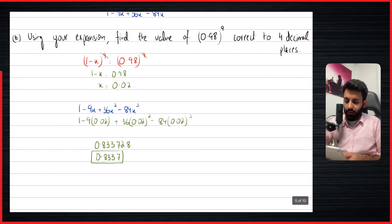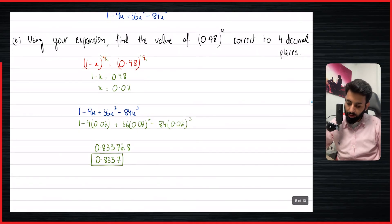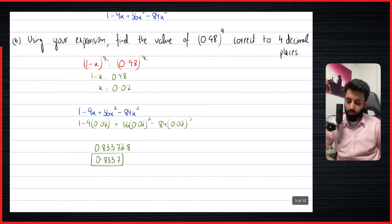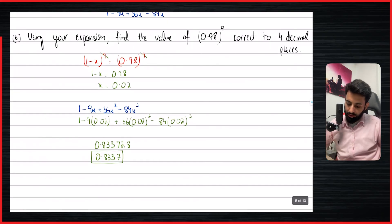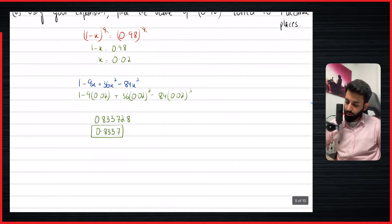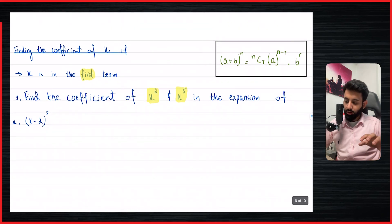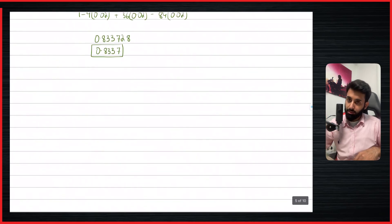And there you go — that's the final answer. Now I'll give you guys a little secret: I want you to actually work out the value of 0.98 to the power nine, and you'll notice that the answer is indeed 0.8337 correct to four decimal places. Your answer will always be very close to what the value is if you were to work it out the conventional way using your calculator. So that brings me to the end of this video. In the next video, I'll be teaching you an important concept where we'll be asked to find the coefficient of x, x squared, x to the fifth, whatever — and we'll see what happens when x is in the first term versus the second term. See you guys in the next one, take care, bye bye.